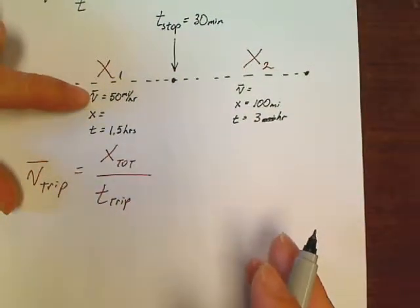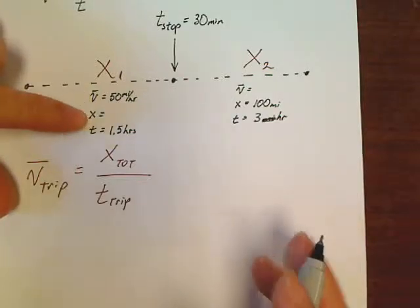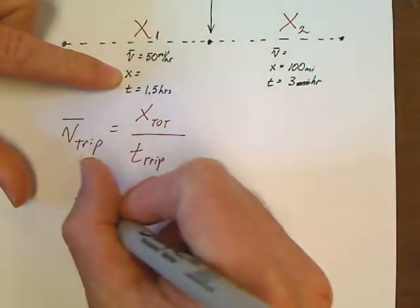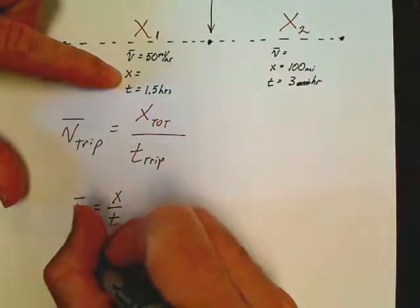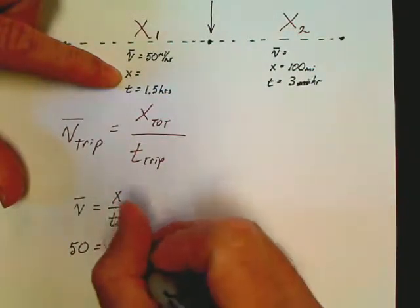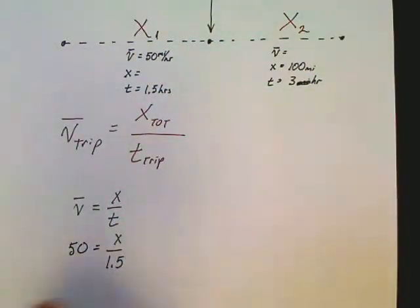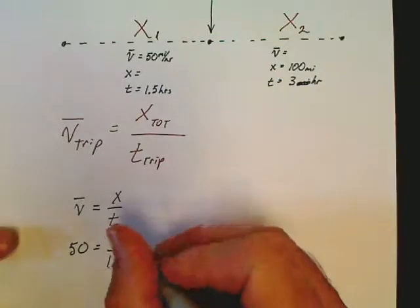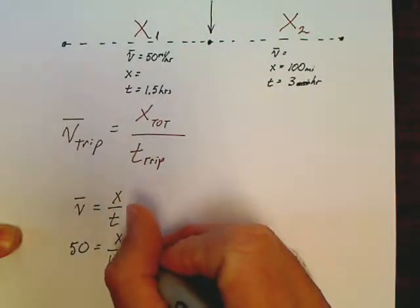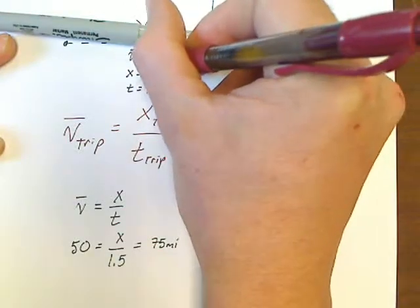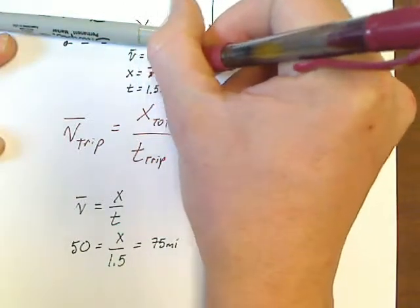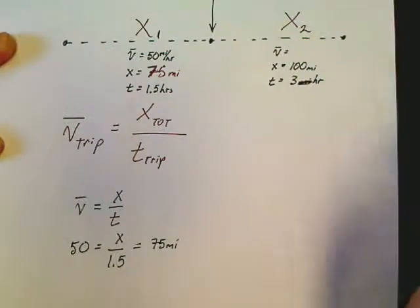Look at what we know about part 1. We've got V and t. Well, we can find X for part 1. V equals X over t - I write my equation because I'm a good student like that. And so we've got 50 equals X over 1.5. Well, 50 times 1.5 is going to be equal to 75 miles. So this first X is 75 miles. We've got our first distance.